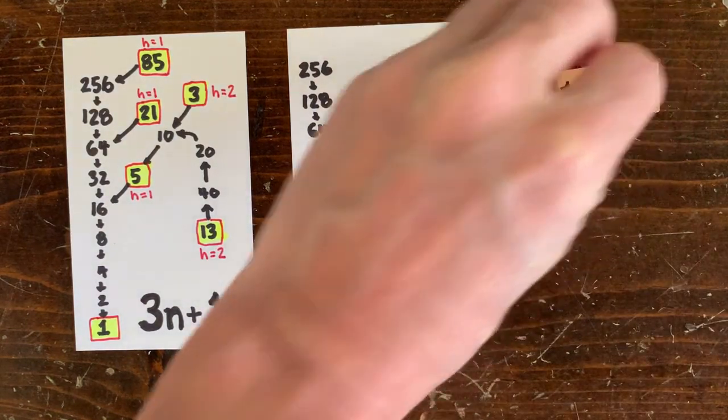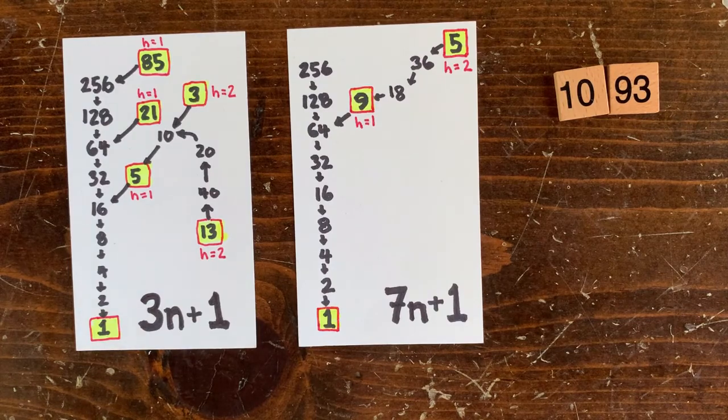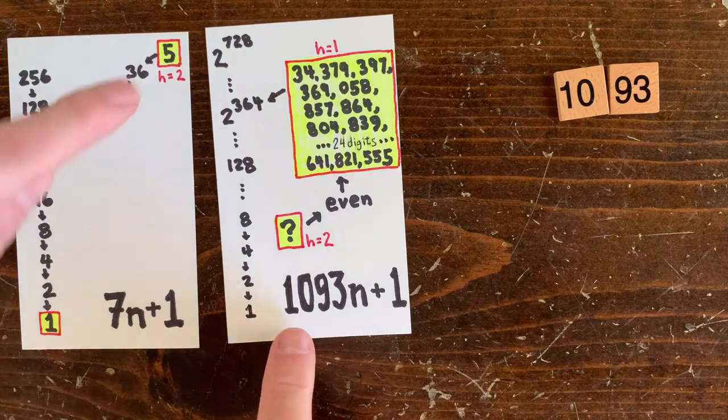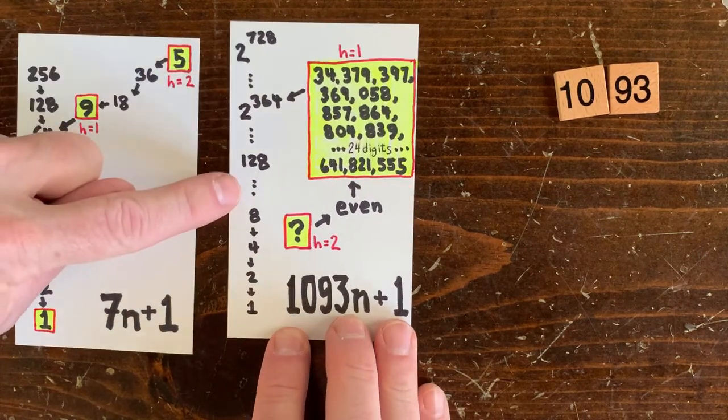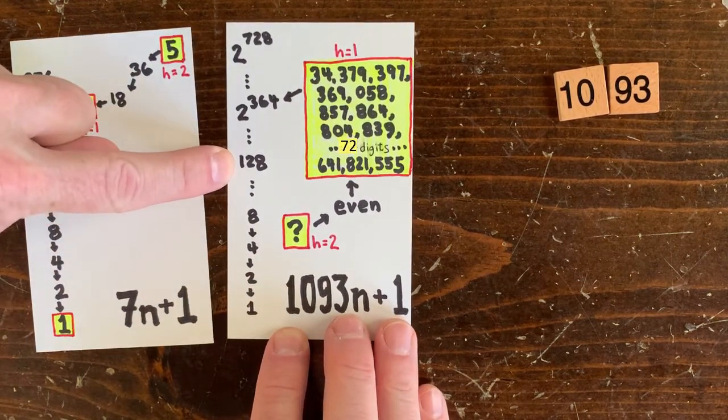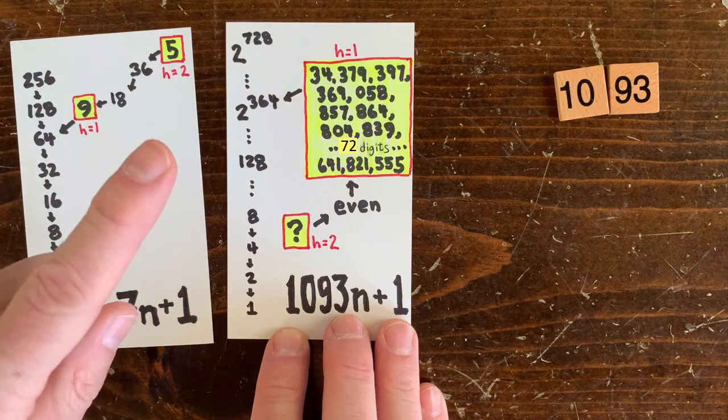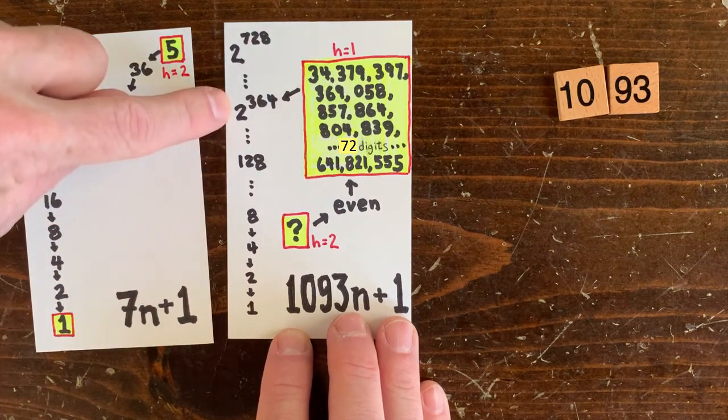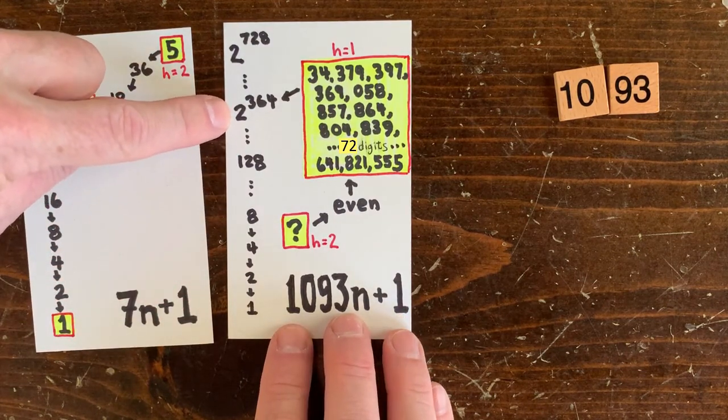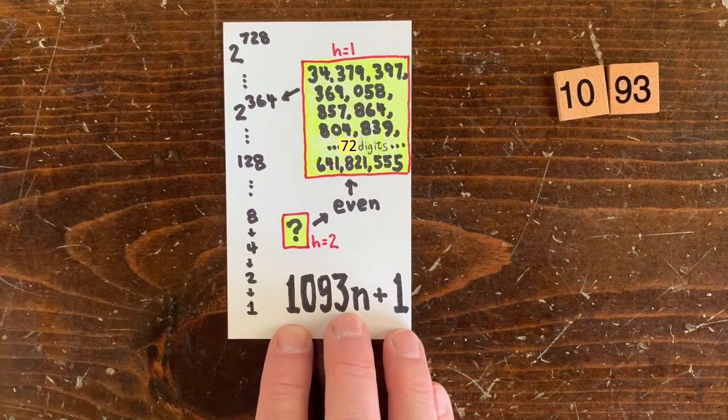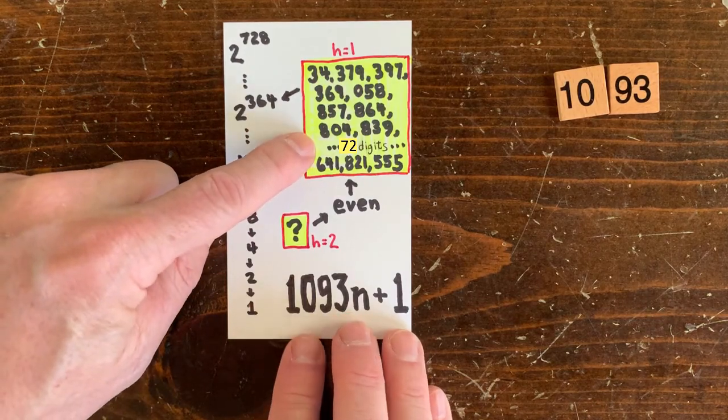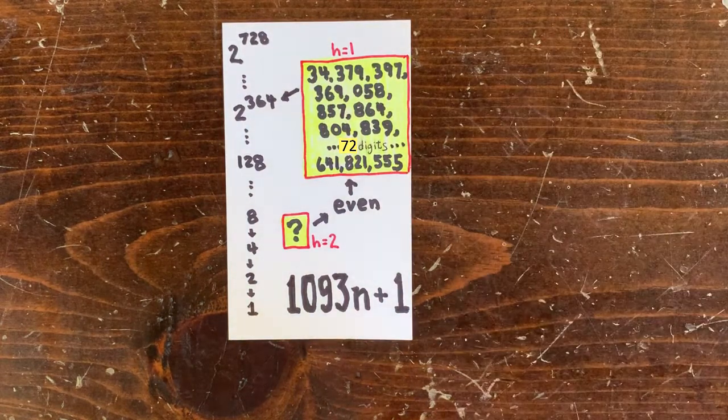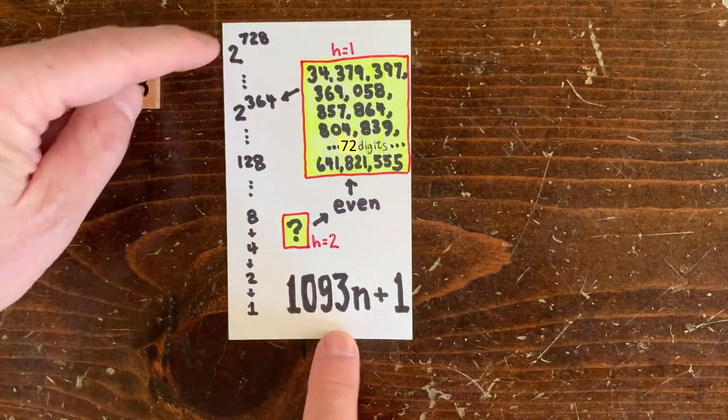Now we get to the 1093n plus 1 problem, as promised. So let's find a number first that connects directly to the spine. 1093 times what plus 1 would equal 128? 128 is too small. Actually, you have to go up this spine for 364 vertebrae. And then you can find the smallest height 1 number that connects to the spine. And if you go up another 364 vertebrae, you can find the next height 1 number.